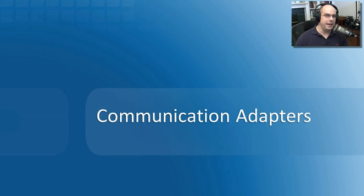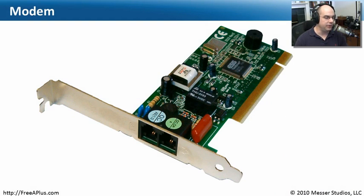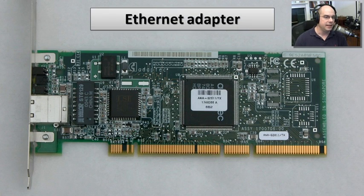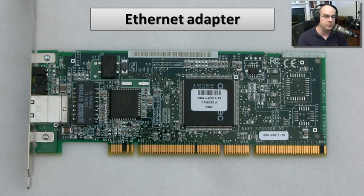There are also communication adapters you may want to add to your computer. A very common one in the past has been modems — taking a PCI connection, plugging it in, and interfacing with a telephone line to communicate to another modem and transfer digital data. These days almost everything uses Ethernet or wireless, and you can plug in a wireless adapter or, as shown here, an Ethernet adapter to connect directly to an Ethernet network just by adding an interface card.